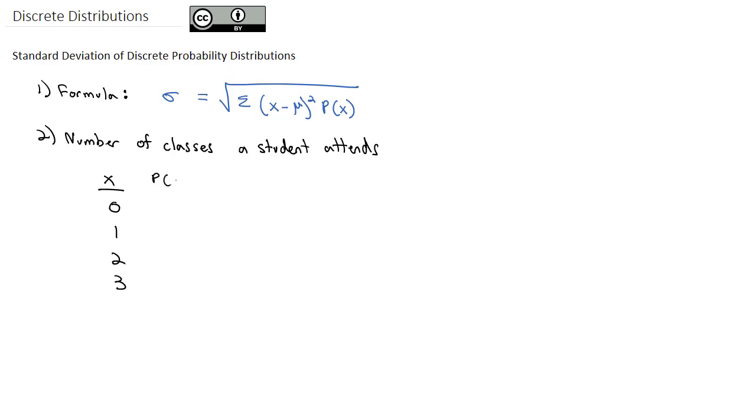The individual probabilities for each of those outcomes was a 0.01 chance of going to zero classes, 0.04 chance of going to one class, 0.15 chance of going to two classes, and 0.80 chance of going to three classes.